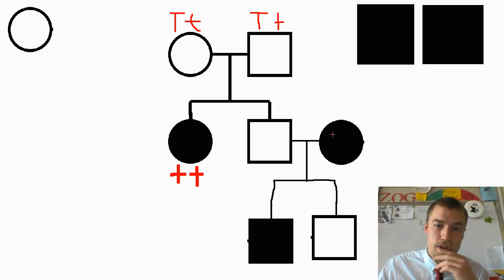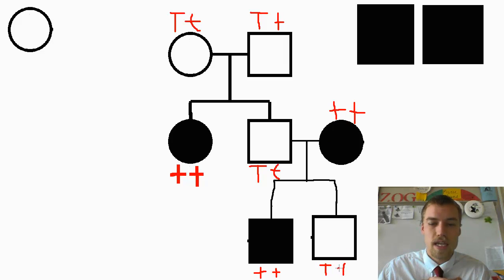All right, so we know that his wife is little t, little t. We know that he has a son that is also little t, little t. So that must mean that he is heterozygous, because otherwise he cannot pass the little t on. And what we know this son is, well, we know that he doesn't have the trait, so he's got one big T, but he's also going to be a carrier because he has a little t.